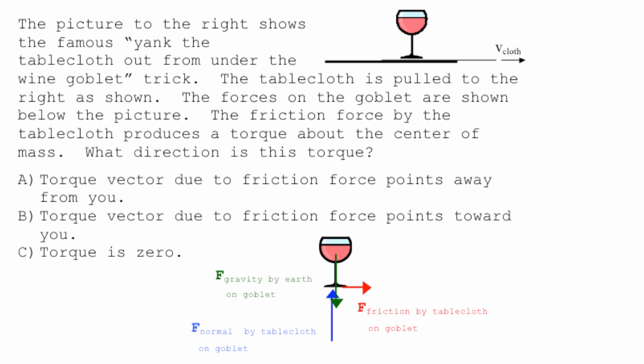My question for you: what's the direction of the torque vector due to the friction force? And I want the torque vector around the center of mass. So we're going to take the center of mass up here as the axis of rotation. And I want you to tell me the direction of the torque vector due to that friction force that pulls to the right down here at the bottom.